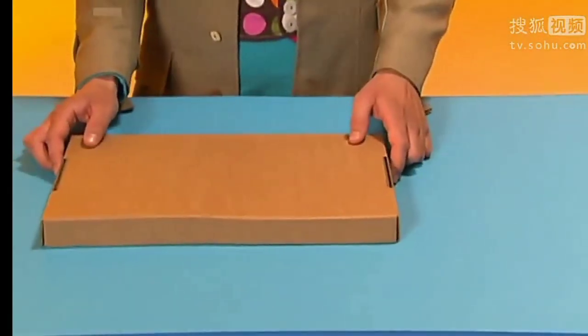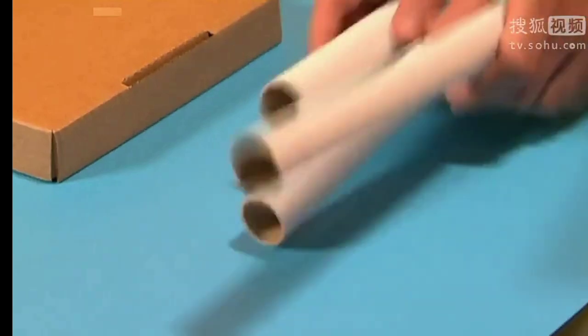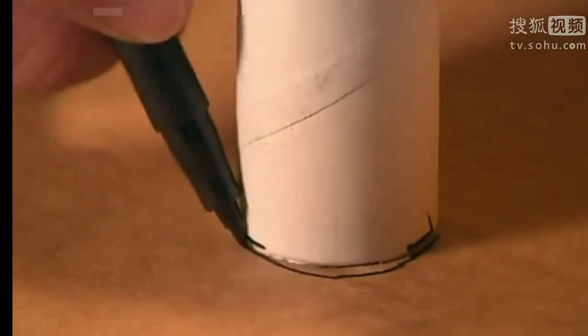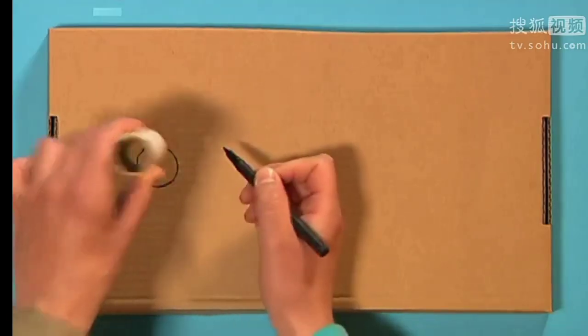Take a cardboard lid and the three cardboard tubes. It looks good if they're all different lengths. Next, draw circles around the tubes on top of your cardboard lid like this.